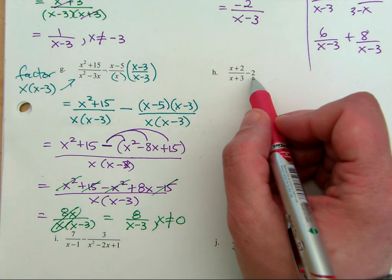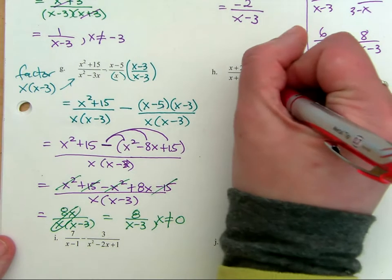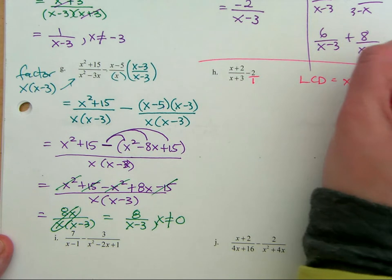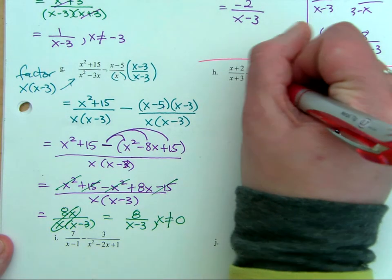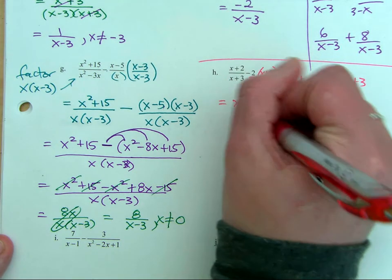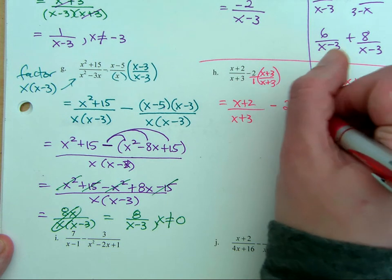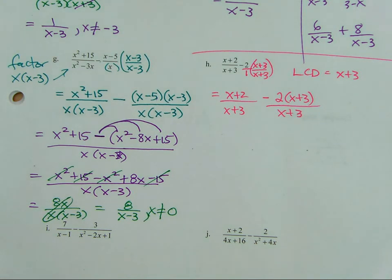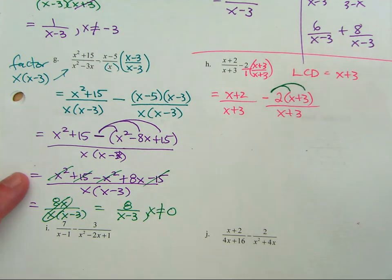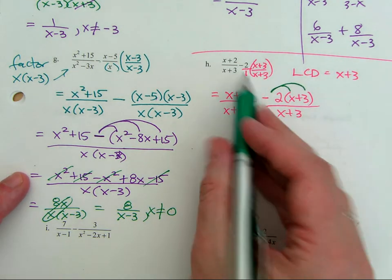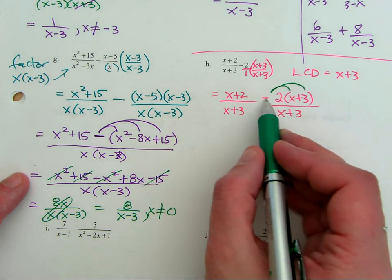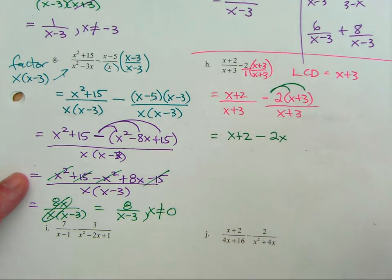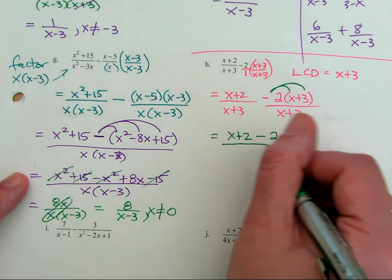What about a number like minus 2? It doesn't have a denominator — or rather, the denominator is 1. What's the LCD of these two fractions? X plus 3. So I need to give this one an X plus 3 over X plus 3. We have X plus 2 over X plus 3 minus 2 times X plus 3 over X plus 3. I don't really have to FOIL — I do need to distribute. I'm giving that negative to the two, because we're subtracting. I have X plus 2 minus 2X, and then minus 6 over X plus 3.